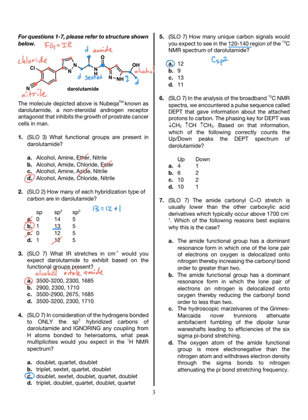Number 6: we're looking at what the DEPT spectrum is going to look like — how many peaks will be up. CH and CH3 groups are up; CH2 groups are down. The molecule only has one CH2 group, so we can eliminate B and C, leaving choices A and D. Counting the CH and CH3 groups: 1, 2, 3, 4, 5, 6, 7, 8, 9, 10. So you have 10 peaks that are up, belonging to CH or CH3. The correct answer is D.